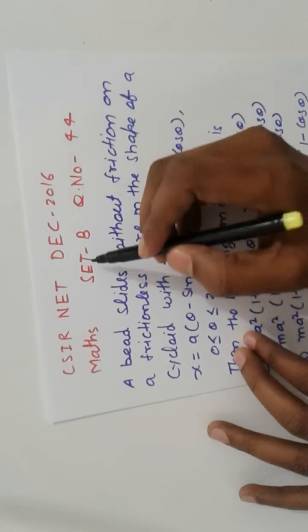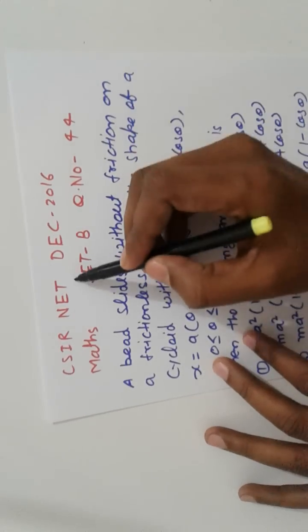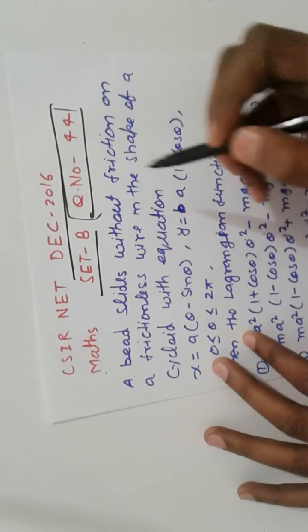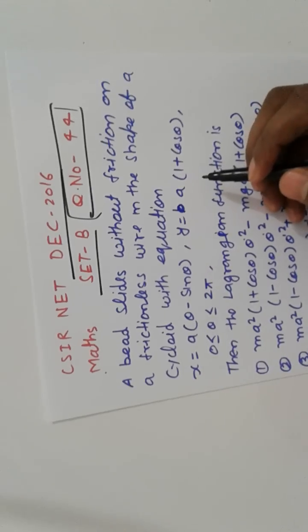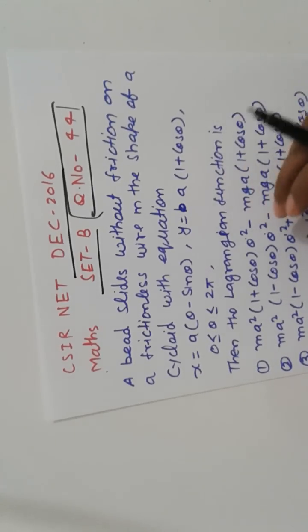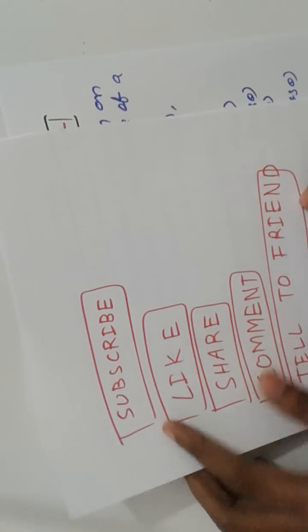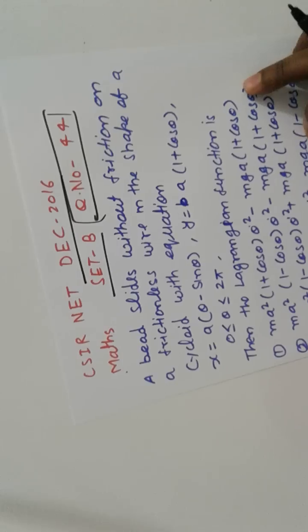Hello friends, good morning. CSIR NET December again, taking question from math set B, equation number 44. That is a problem of classical mechanics. Before watching this solution, please subscribe, like, share, and comment, and tell your friends.